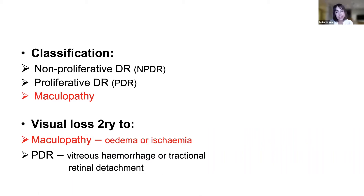Diabetic macular edema is a leading cause of visual loss in the working-age population in many developed countries — not currently the case in the UK, partly due to the success of screening programs. The more dramatic cause of visual loss from proliferative retinopathy — vitreous hemorrhage or tractional retinal detachment — is actually rarer. It's DMO that's the problem.